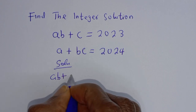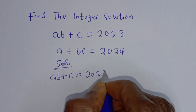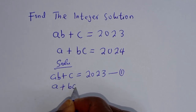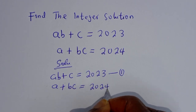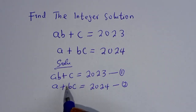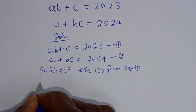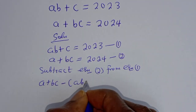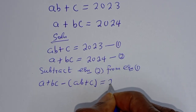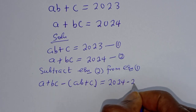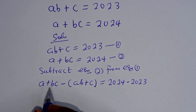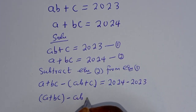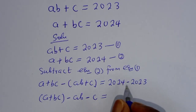ab + c = 2023 — let's call this equation one. a + bc = 2024 — let's call this equation two. Then let's subtract equation two from equation one. We have a + bc minus (ab + c) is equal to 2024 minus 2023, which gives us a + bc - ab - c = 1.